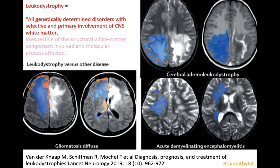The definition of leukodystrophy has been fine-tuned and evolved over the years. There must be selective or primary involvement of the white matter, and it has to be genetically determined. Diseases that are neoplastic or inflammatory are not leukodystrophies. If there is a genetic abnormality, it is a leukodystrophy. Both genetic and acquired white matter diseases can be referred to as leukoencephalopathy — and to make things more complicated, some leukodystrophies carry the term leukoencephalopathy in their name because the genetic basis wasn't known at the time.